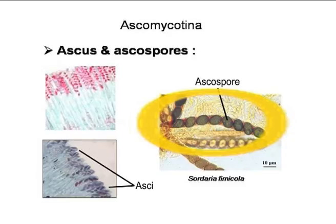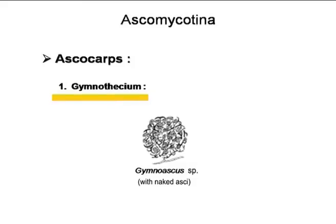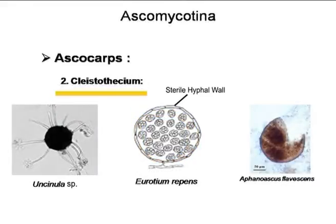Thus, ascospores of Ascomycotina are endogenous in nature. These asci containing ascospores are grouped into a typical fructification called ascocarp, which is produced by the aggregation of both fertile and sterile hyphae. Different types of ascocarps are recorded, of which one is gymnothecium, where the asci remain intermingled with vegetative hyphae, and a typical peridium or covering is absent, as found in gymnoascs.